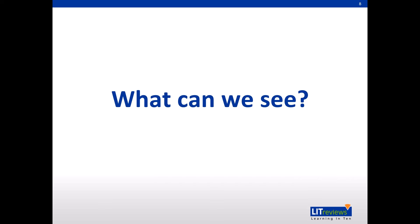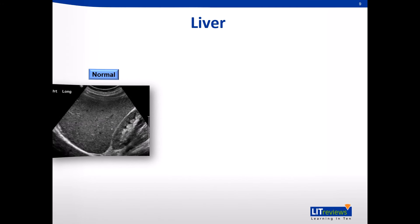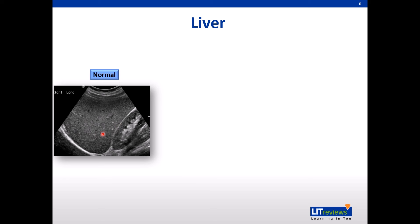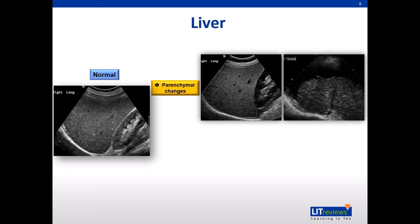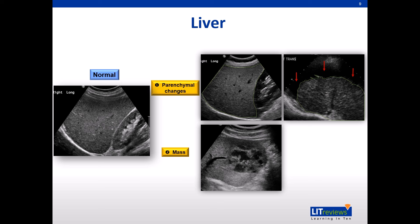A normal liver parenchyma has echoes similar to or slightly brighter than the kidney. In fatty liver, the liver parenchyma demonstrates increased echoes and appears significantly brighter than the adjacent right kidney parenchyma. The top right image shows a small liver with an irregular border and heterogeneous echoes due to cirrhosis. Note also the ascites surrounding the liver capsule, as shown by the red arrows.